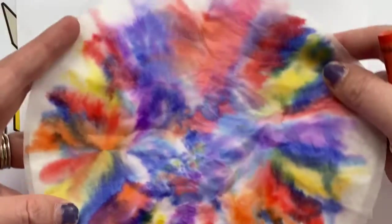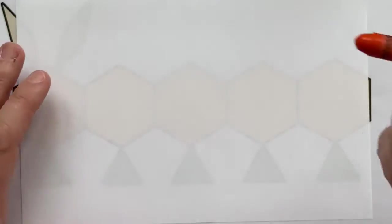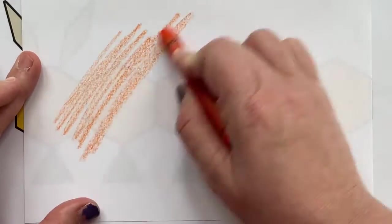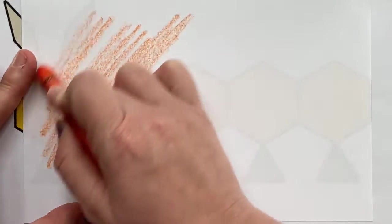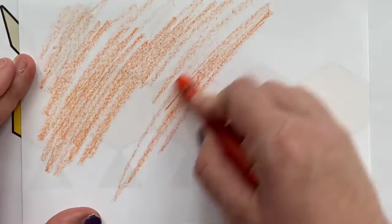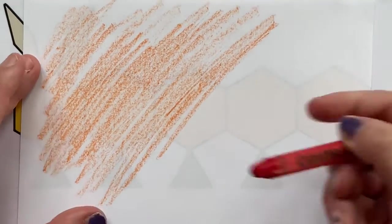You also can take your crayons and you can create a pattern that way. Eric Carle's patterns are very much non-purposeful - there's not usually circles or lines or shapes. It's usually a lot of back and forth strokes with a lot of color.